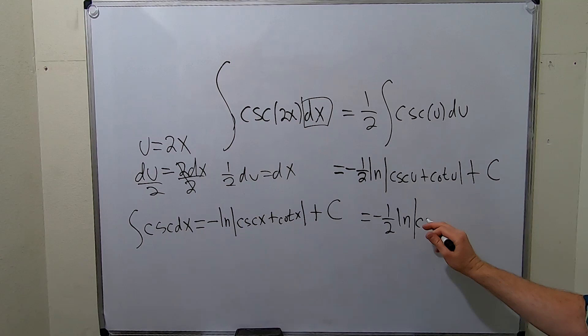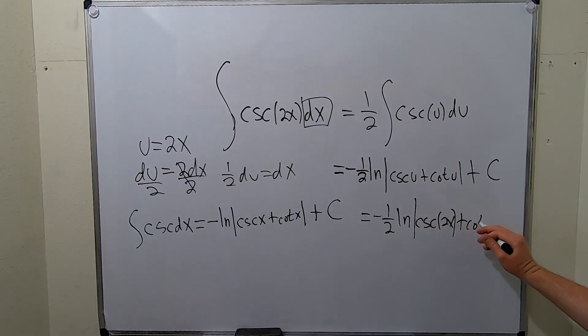So absolute value cosecant of 2x plus cotangent of 2x absolute value, and then plus C. And that my friends would be the final answer.